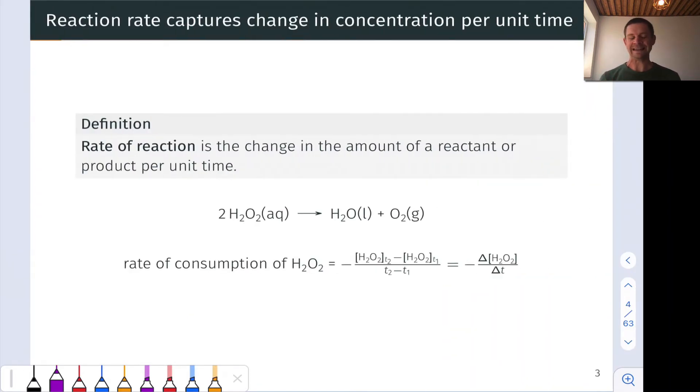Let's start with a definition for the rate of reaction. Rate of reaction is the change in the amount of a reactant or product or change in concentration of a reactant or product per unit time. And this quantity is positive by convention. And this is worth keeping in mind because as we think about change, we can think about a concentration increasing or decreasing.